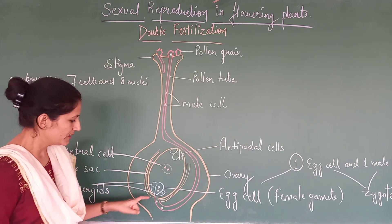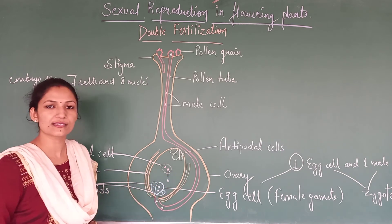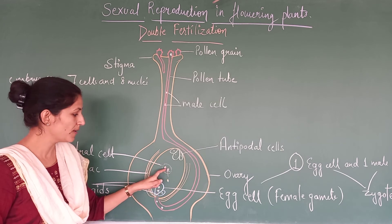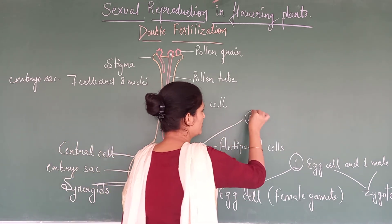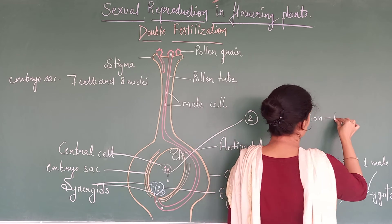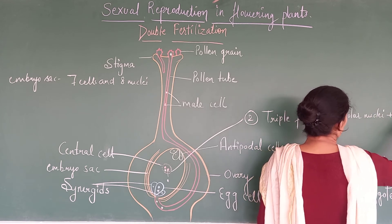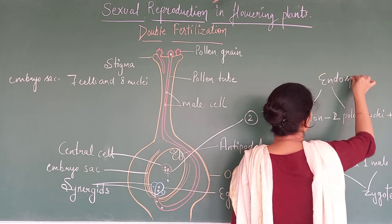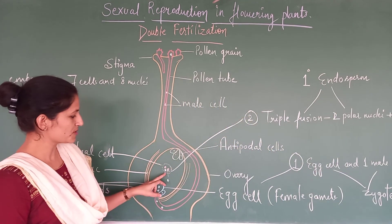Second, the male gamete which is released into the embryo sac — the second one will reach the central cell and fuse with it. The central cell already has 2 polar nuclei. This is the 3rd nucleus from the male gamete. So 3 nuclei are going to fuse. This is the 2nd fertilization, which is termed as triple fusion. In the triple fusion, 2 polar nuclei present in the central cell plus 1 male cell nucleus fuse to form the primary endosperm cell.